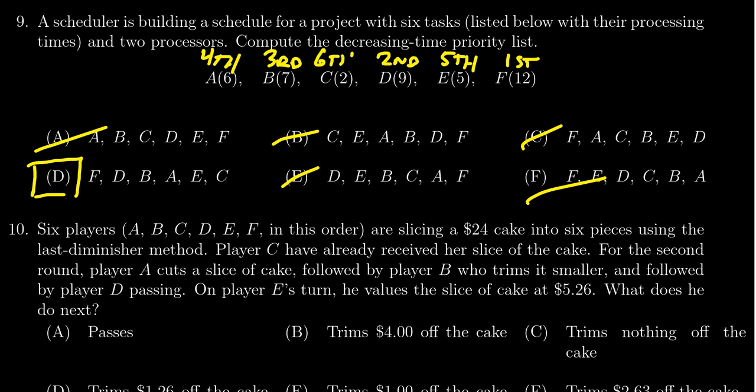So looking at my marks there, the highest priorities would be then F, then D, then B is in third, A is in fourth, E is in fifth, C is in sixth. Choice D is the correct decreasing time priority list.